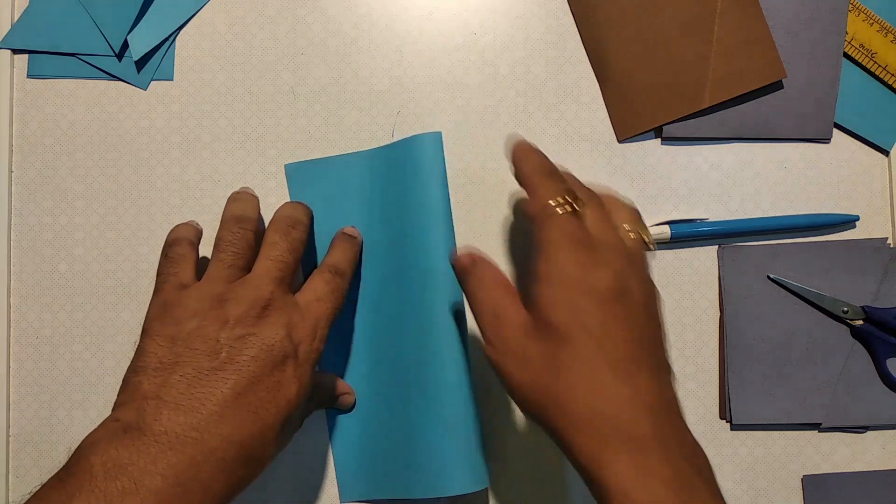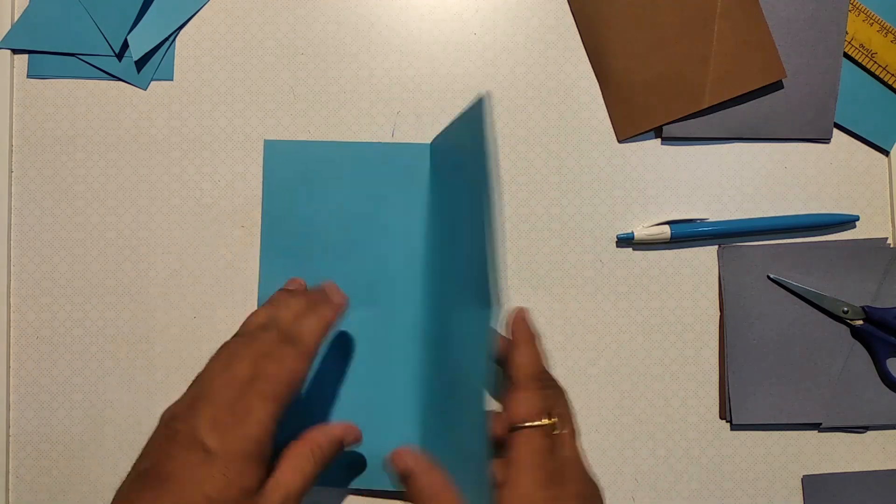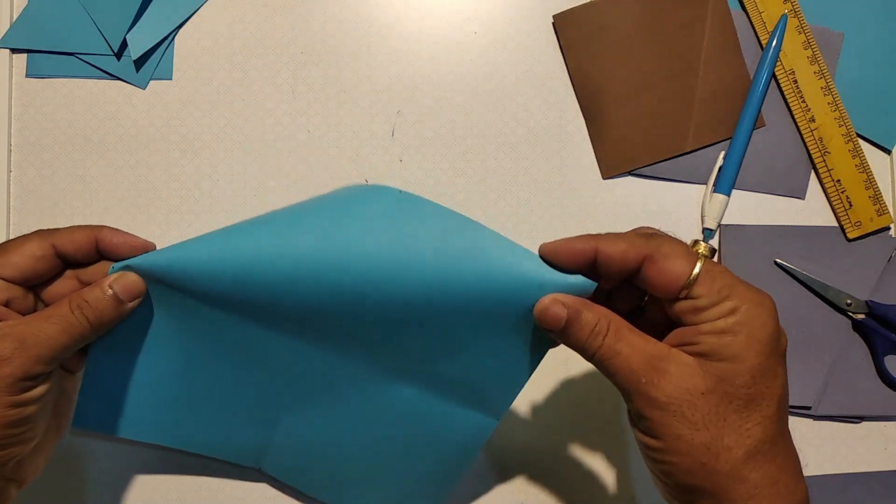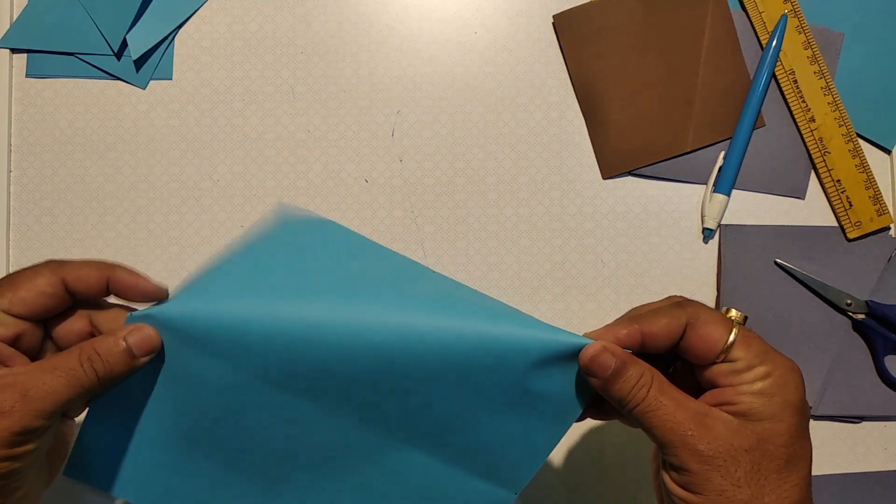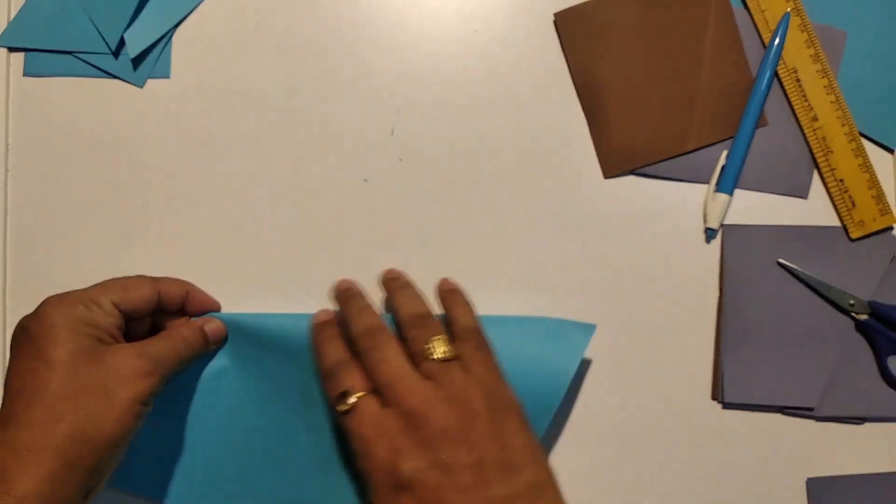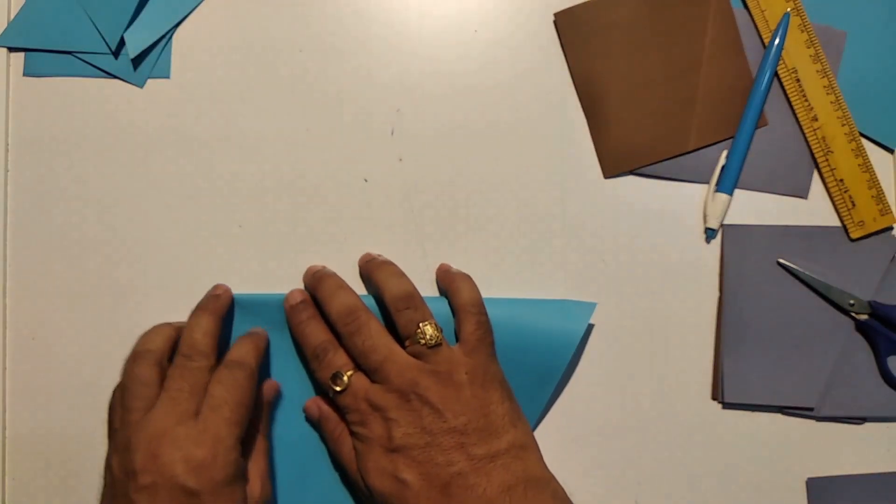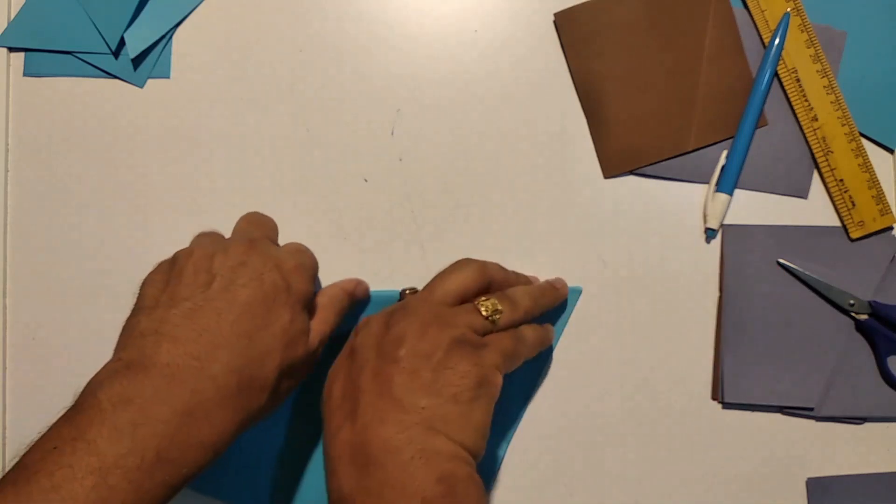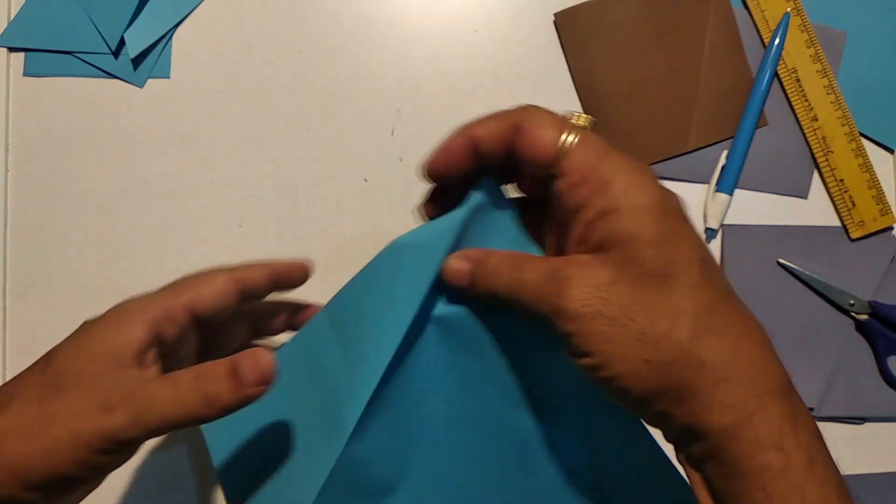Now make creases from these center points to the opposite corner of the square. This is how it is done and we have to do the same thing on all four sides.